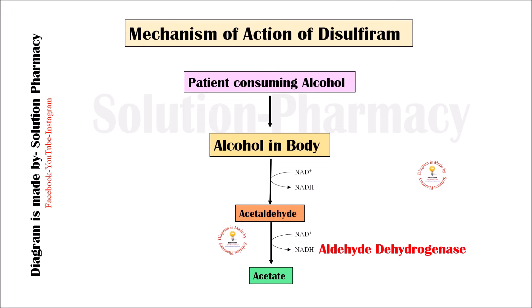However, when a person consumes alcohol after prior intake of disulfiram, disulfiram blocks the activity of the enzyme aldehyde dehydrogenase. As mentioned, aldehyde dehydrogenase is responsible for the conversion of acetaldehyde into acetate. Due to this inhibition, acetaldehyde cannot be converted into acetate, and as a result, acetaldehyde starts to accumulate in the body.